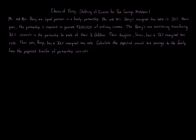Choice of entity: shifting of income for tax savings. Problem one — Mr. and Mrs. Berry are equal partners in a family partnership. Their marginal tax rate is 35%. Next year the partnership is expected to generate $200,000 of ordinary income. The Berrys are considering transferring a 20% interest in the partnership to each of their two children. Their daughter Straw has a 12% marginal tax rate; their son Rasp has a 22% marginal tax rate.